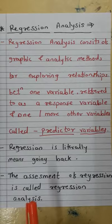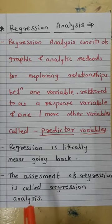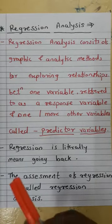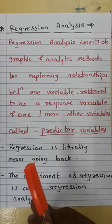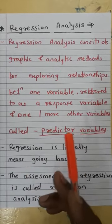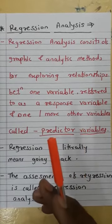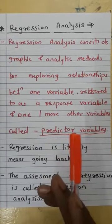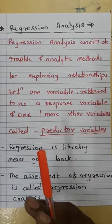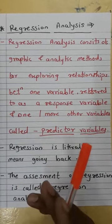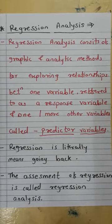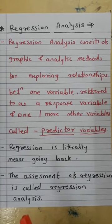Hello students, today's lecture we are going to discuss Chapter number 6. Regression analysis consists of graphic and analytical methods for exploring relationship between one variable referred to as a response variable and one or more other variables called predictor variables. Correlation tells us about the relationship but doesn't give quantity.